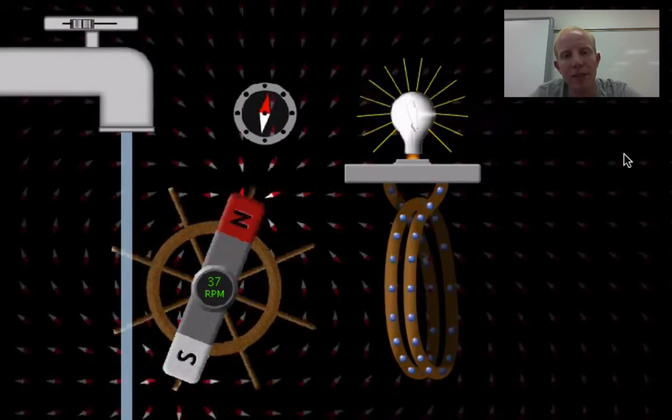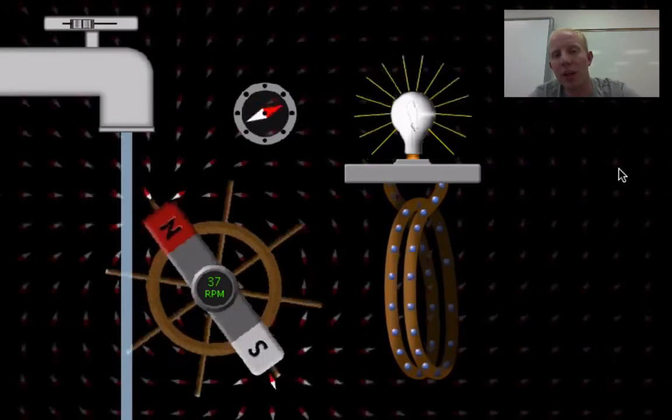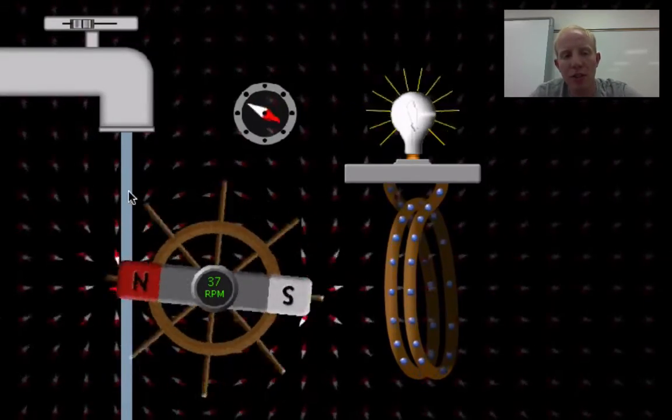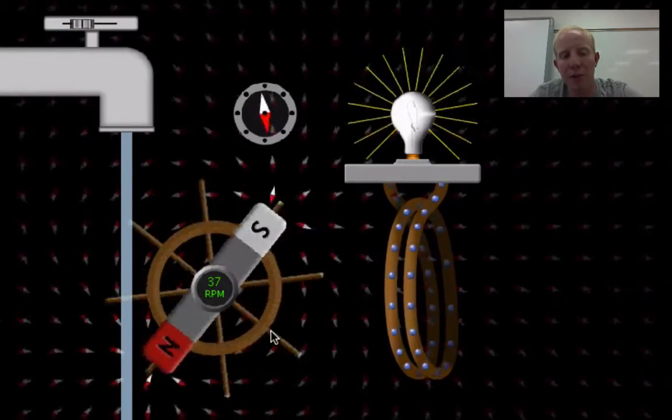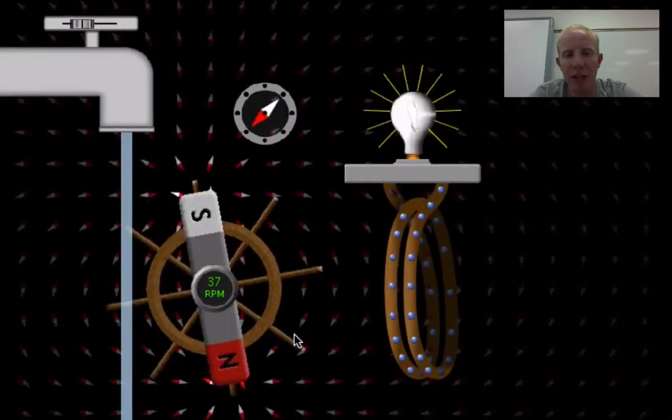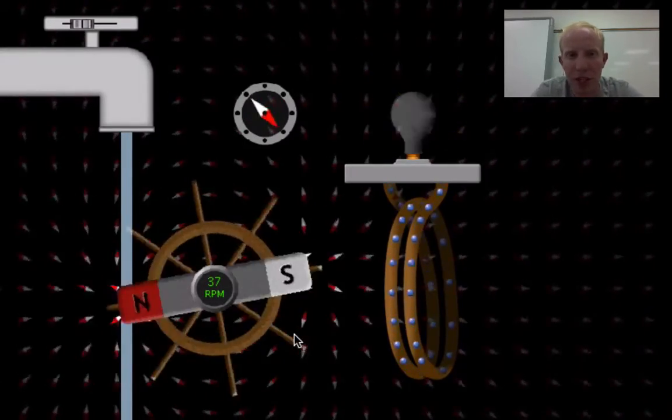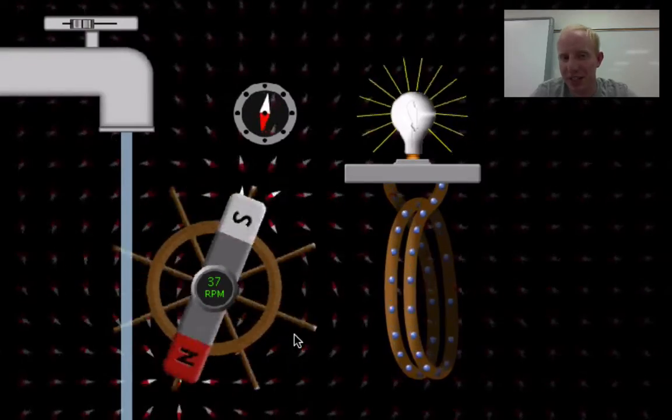You'll find that a lot of ways we generate electricity are kind of based on this principle. Now, it's not just have water spill down on a magnet. It actually isn't very effective for production for a whole city. But we often use things like steam.